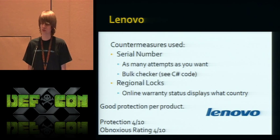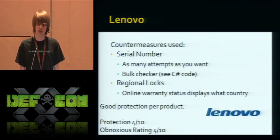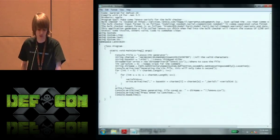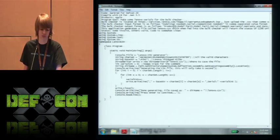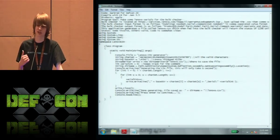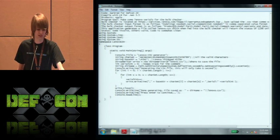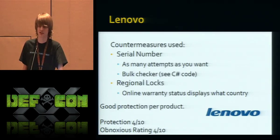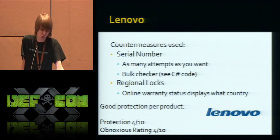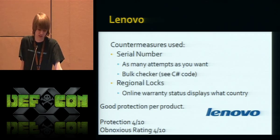Lenovo uses a serial number, but they were nice enough to give us unlimited attempts on an online validator — and if that wasn't enough, there's a bulk checker where you can upload a CSV file with as many serials as you want. I have code that will permutate through a base string — half a serial — and give you every combination, then upload the CSV to Lenovo's link. You get back country, warranty info, model, manufacture year — any information you want. Regional locks only work if the online validator doesn't tell you the country every time you check. This is okay protection; it will keep some people out.